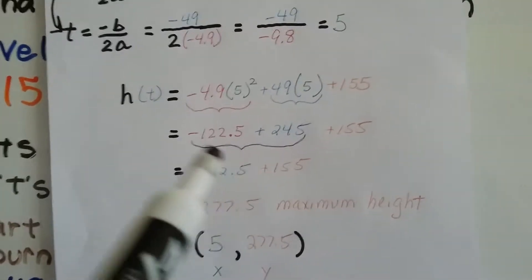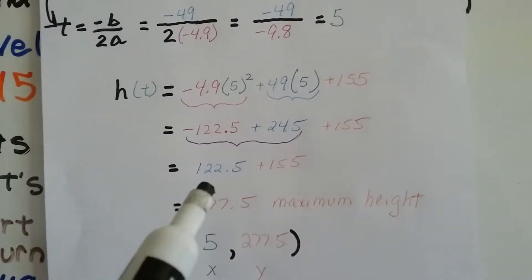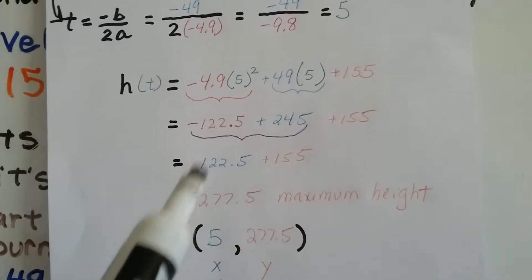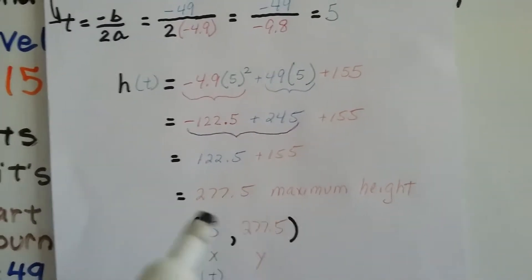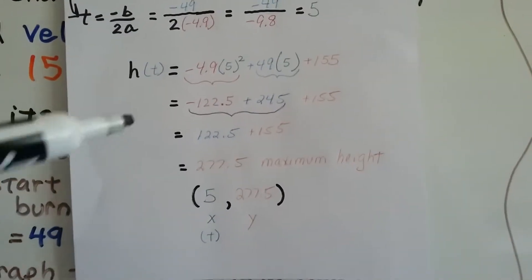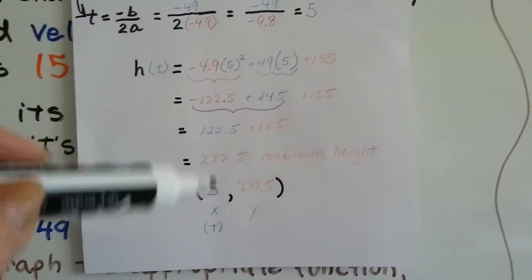When we add these two together, because that's a negative and that's a positive, we get 122.5, because that's actually half of that. We add our 155 and we get 277.5, our maximum height, and we know our t value is 5.